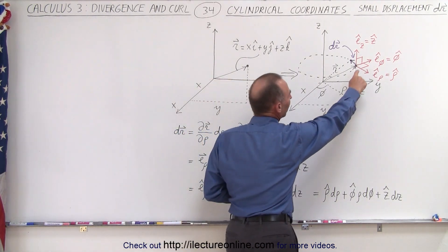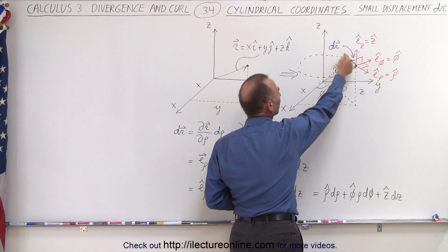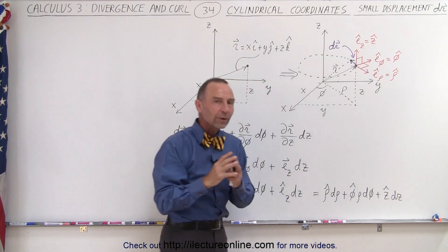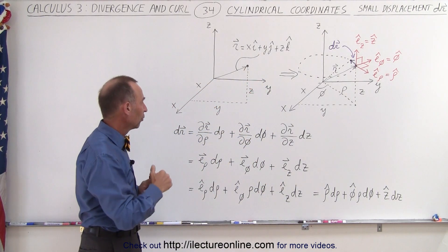So let's say we have an initial point P right here. Now we want to find another point nearby, so we have a small little displacement vector dr. How do we express that in terms of the unit vectors in cylindrical coordinates?